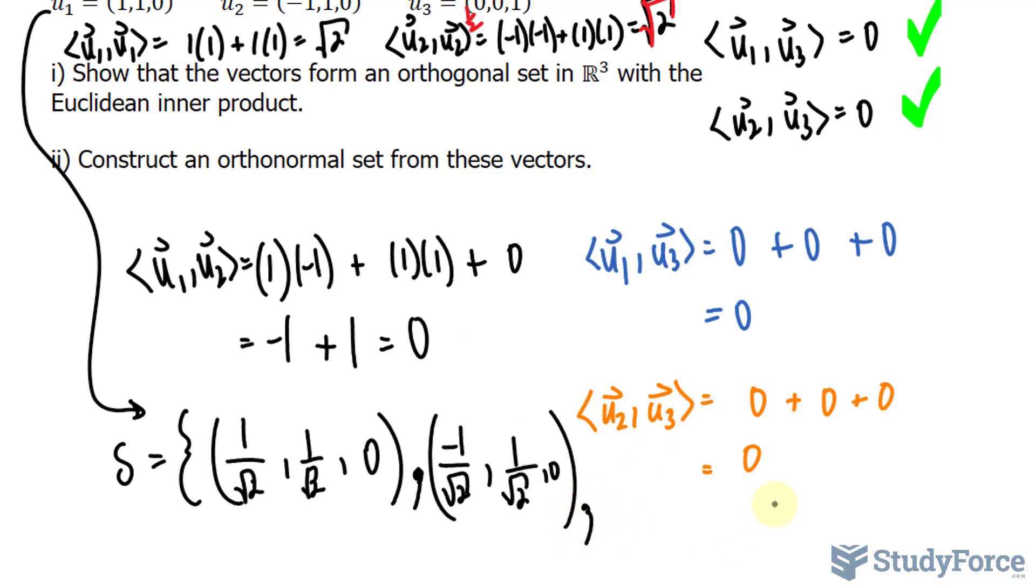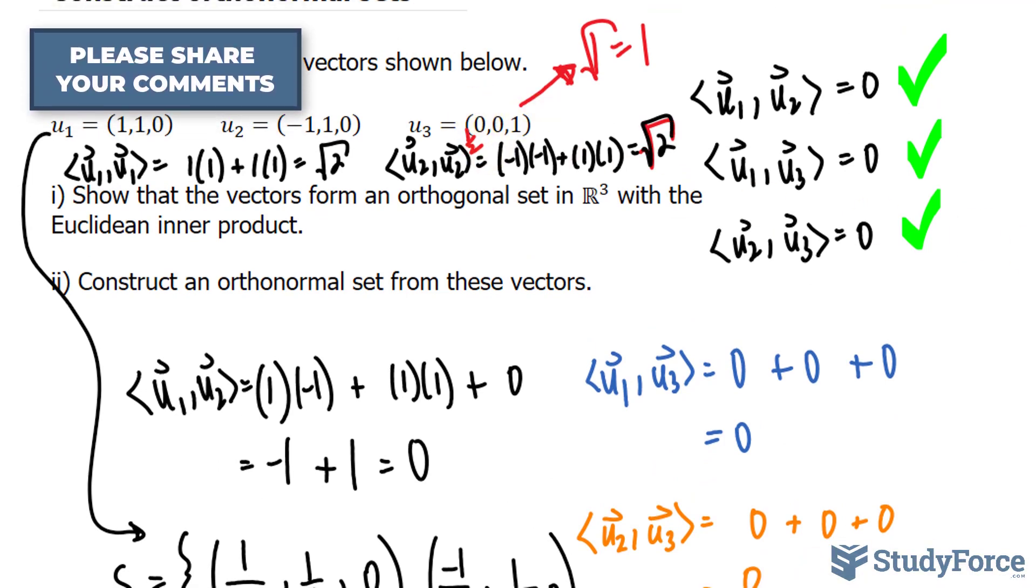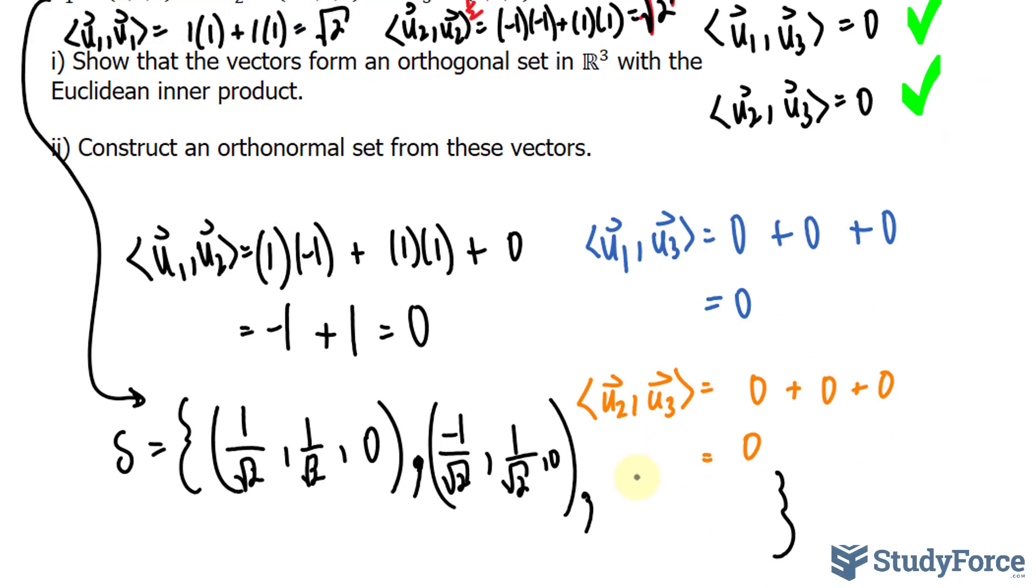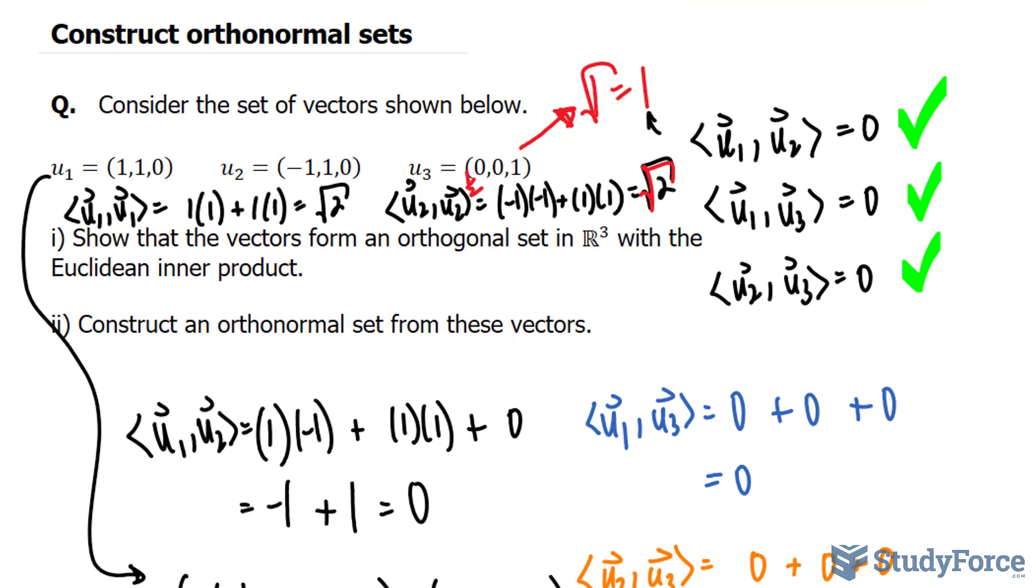And the last element in this set will be this one. Zero divided by one, that one right there, it's zero. Zero divided by one is zero. And one divided by one is one. So what you see S is equal to is called the orthonormal set for these vectors. And remind you that you can only do this if you've proven these three. So there you have it. That is how to construct orthonormal sets.